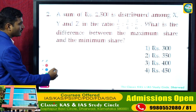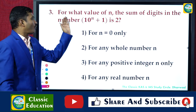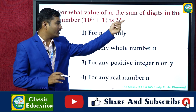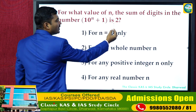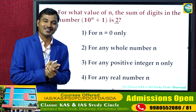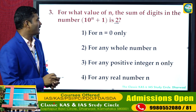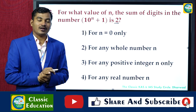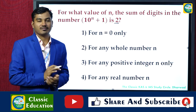For what value of n is the sum of the digits in the number 10^n + 1 equal to 2? That means we need to find for what value of n the digit sum of (10^n + 1) equals 2. We substitute values from the options.